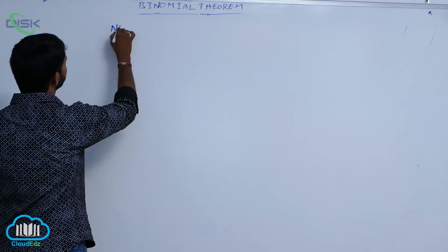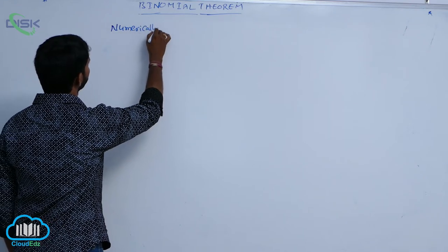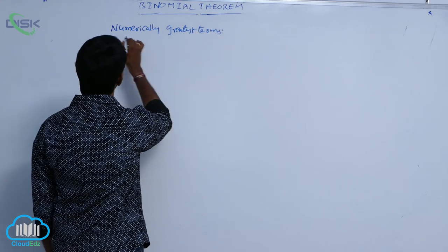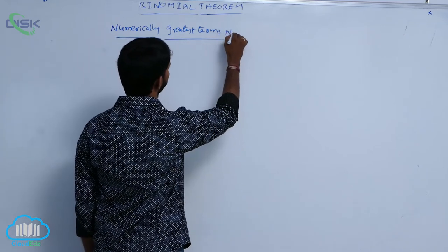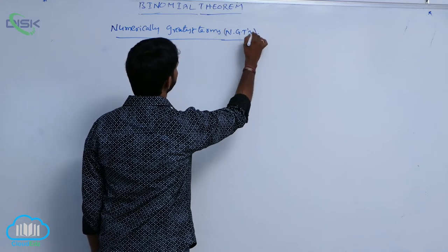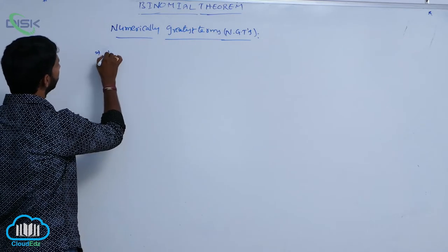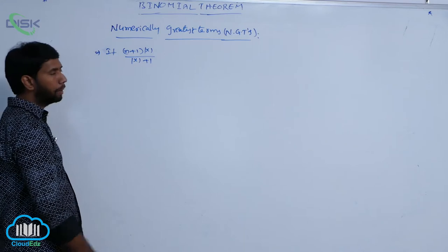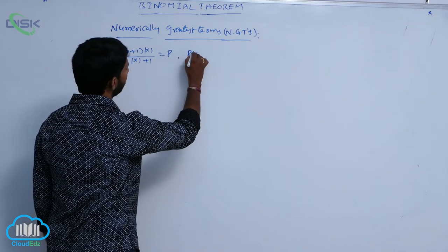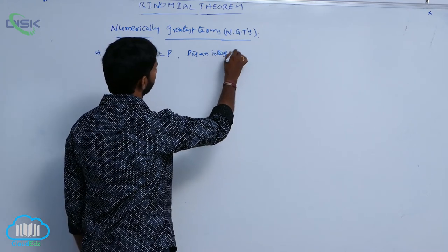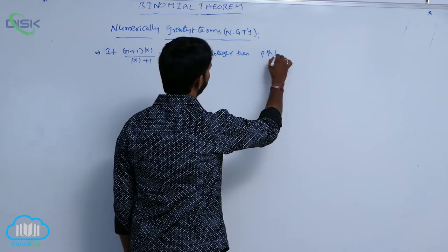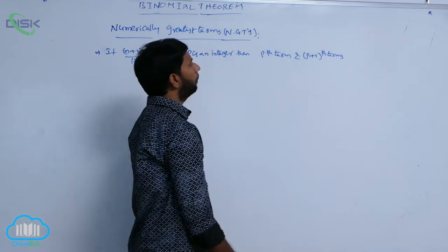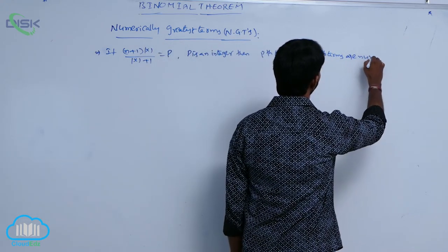Next one is numerically greatest terms, NGT. For the first case, if (n+1) times mod x divided by mod x plus 1 is equal to P, where P is an integer, then the P-th term and P plus 1-th terms are numerically greatest terms.